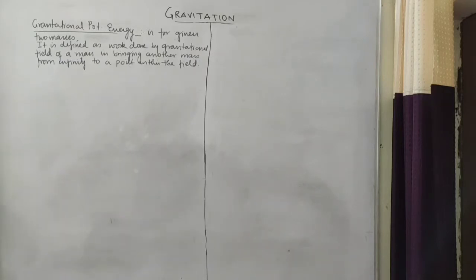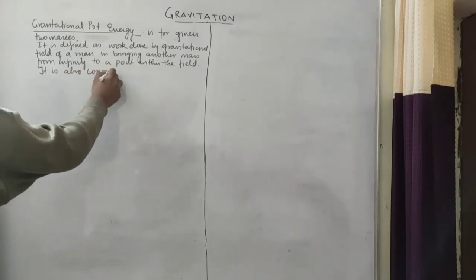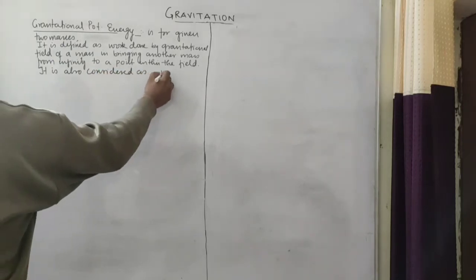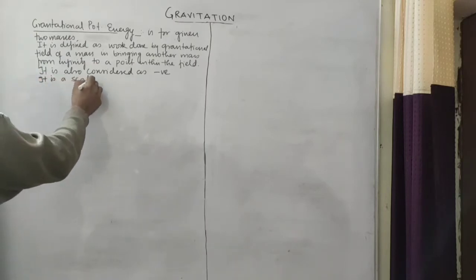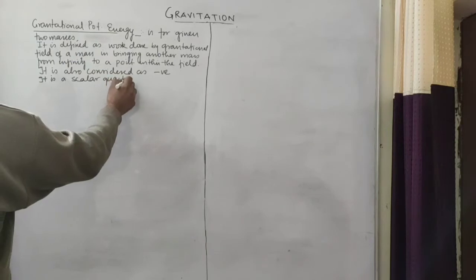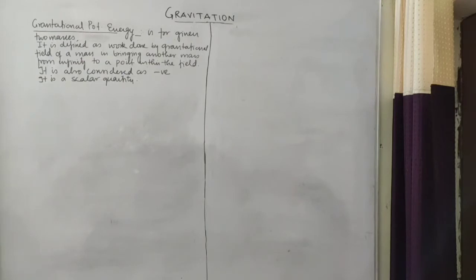It is also a scalar quantity and is considered as negative. Being a scalar quantity, it has no direction. Its unit — since gravitational potential energy is a form of energy — will have the same dimension as that of work, and its unit will be Joule.